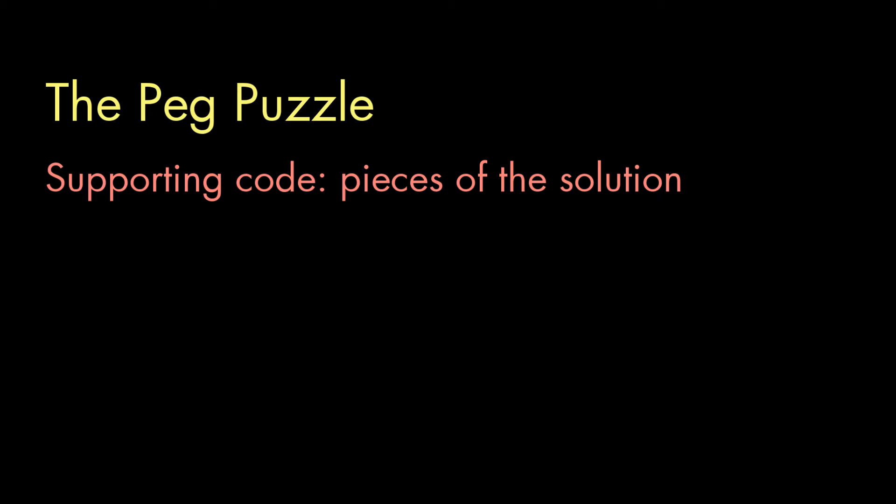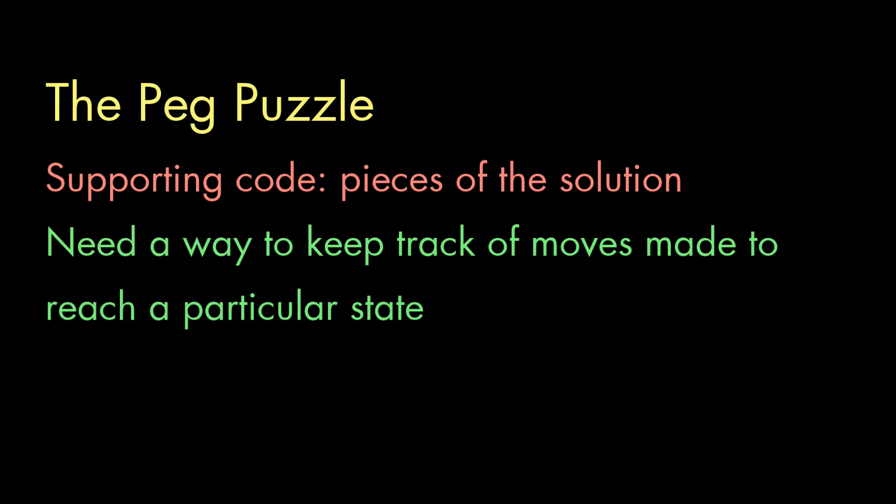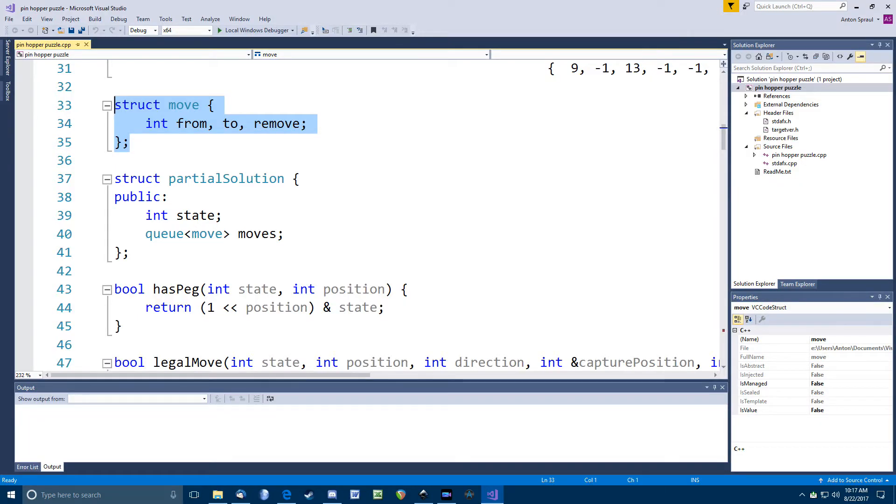Next, I started writing some support code I knew I would need. Once my code reached a state with just one peg, it would need some way to display all the moves that it took to get there. So, I needed a way to store a sequence of moves along with each board state. I created a struct, which in C++ is basically just a class, except we tend to use them for lightweight classes where we're more about grouping and naming data and not so much about information hiding.